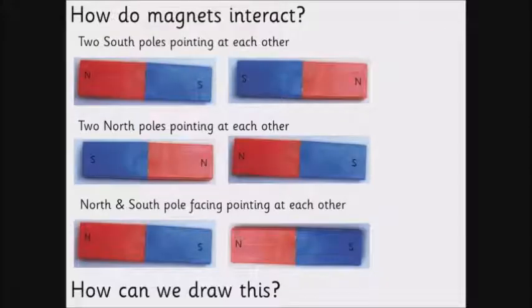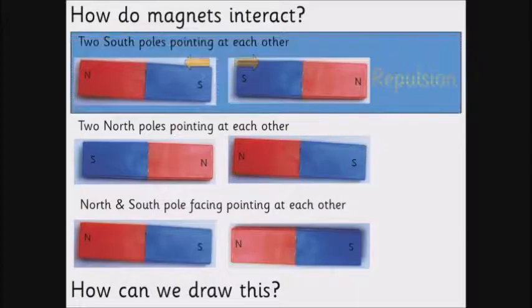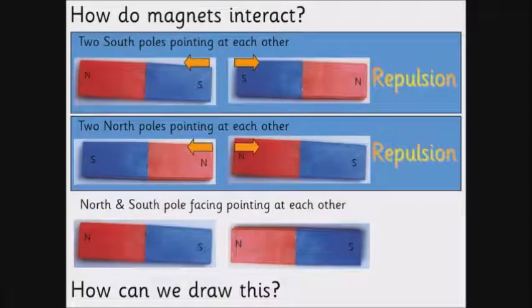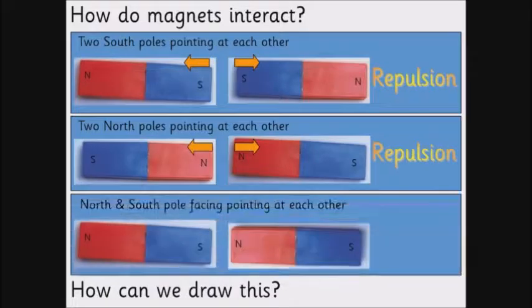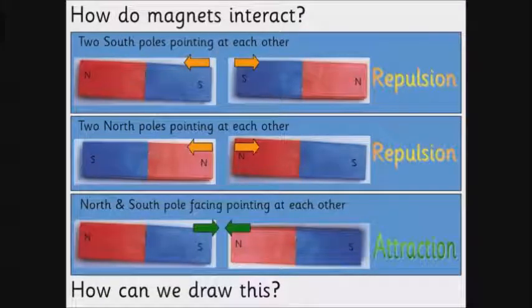So very simple stuff. How do magnets interact? Two south poles pointing at each other, obviously they will repel. Two north poles pointing at each other, they repel. And north and a south pole will attract. More importantly, how do we show this on a diagram?